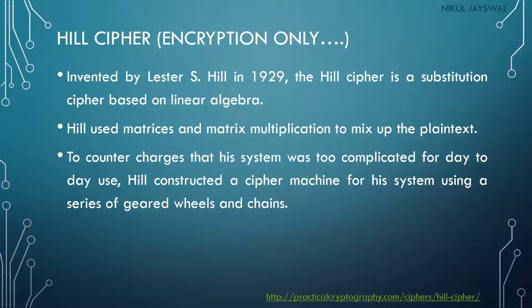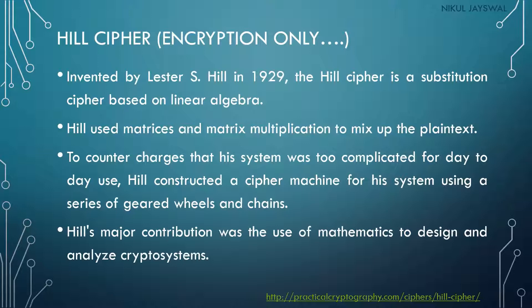The Hill cipher was considered too complicated for day-to-day use, so Hill constructed a cipher machine using a series of geared wheels and chains to convert plain text into ciphertext. His major contribution was the use of mathematics to design and analyze the cryptosystem — this was one of the first algorithms where mathematics was applied in encryption and decryption.